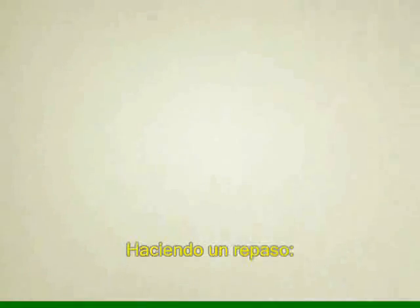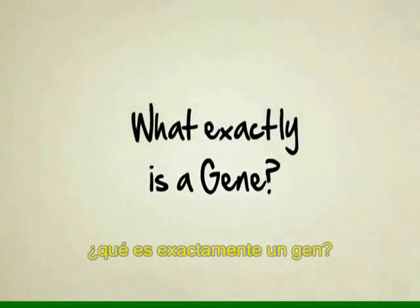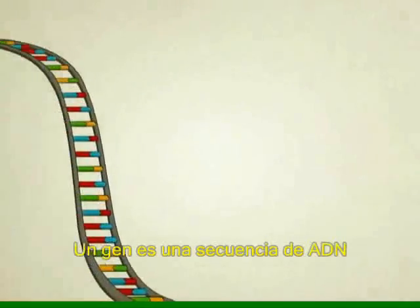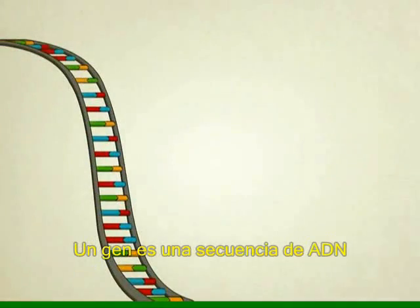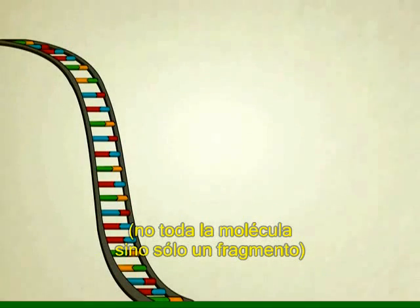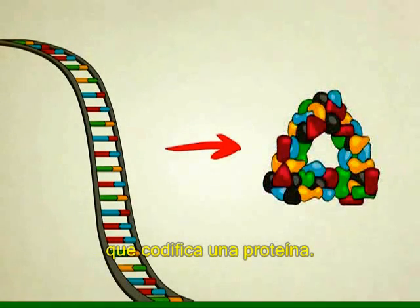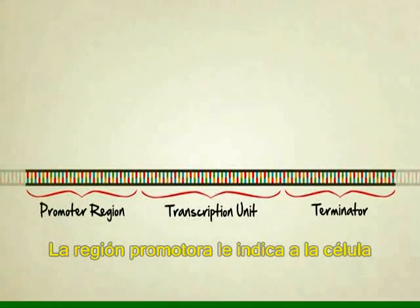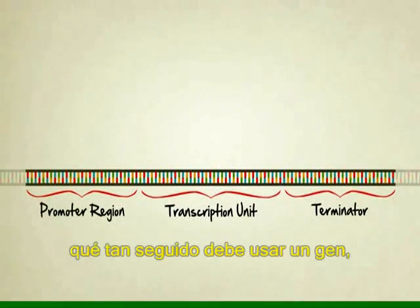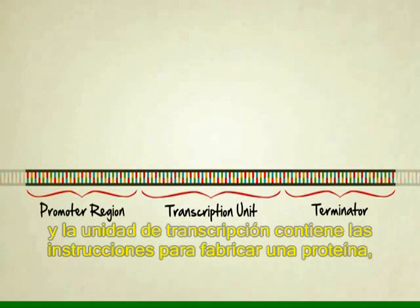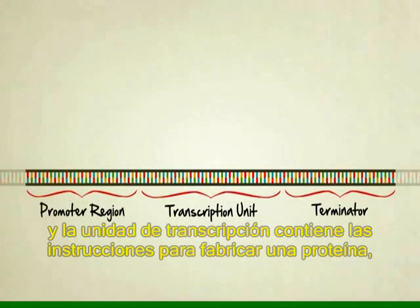So just to sum things up: what exactly is a gene? A gene is a special stretch of DNA — not the entire strand, just a segment that codes for protein. The promoter region tells the cell how often or if ever the gene should be used. The transcription unit is what actually contains the protein-building instructions.